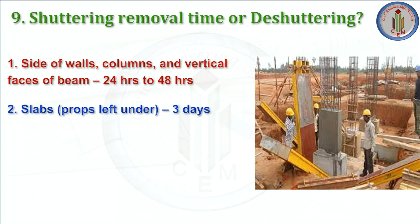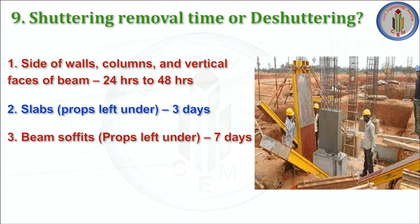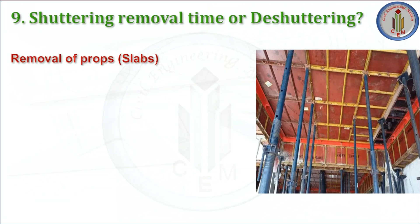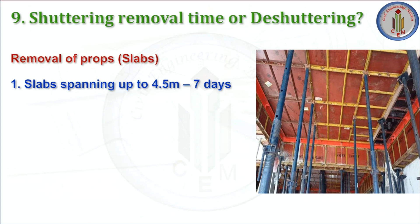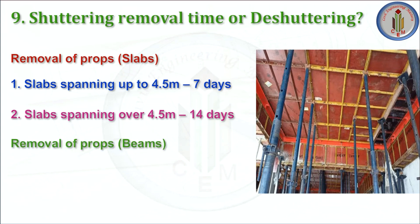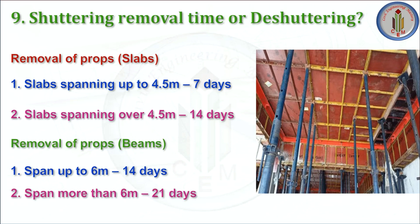For slabs with props left under, it takes 3 days. For the soffit of beams with props left under, that is 7 days. For removal of props under slabs spanning up to 4.5 meters, it takes 7 days; spanning over 4.5 meters, 14 days. For removal of props under beams spanning up to 6 meters, it is 14 days; spanning more than 6 meters, it is 21 days.